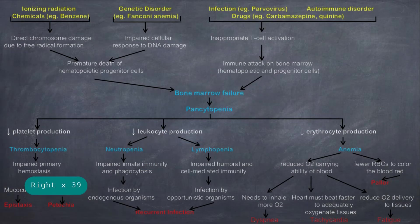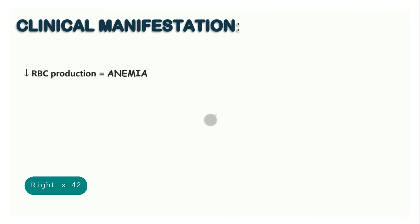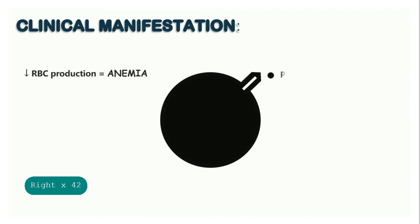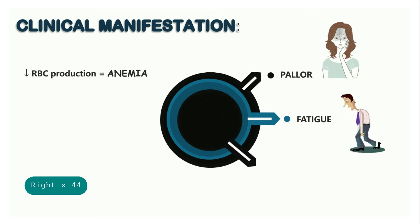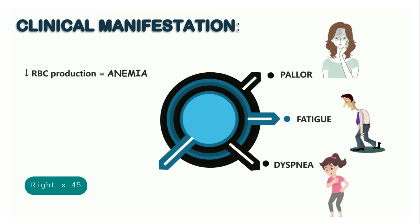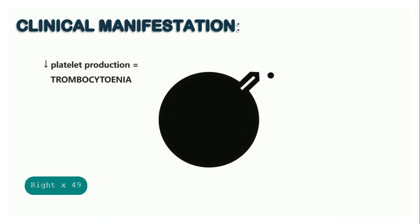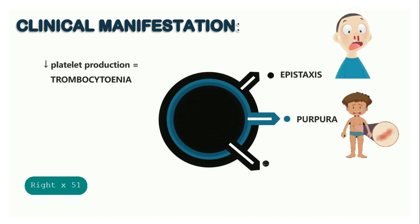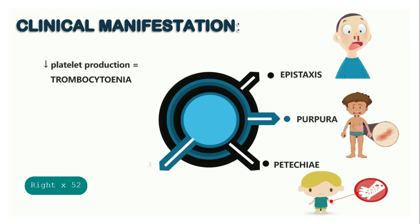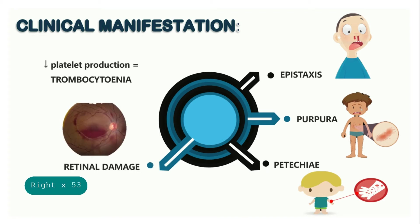The clinical manifestations for anemia are pallor, fatigue, dyspnea, and palpitation. For thrombocytopenia, epistaxis, purpura, petechiae, and retinal damage. For neutropenia, it's recurrent infection.